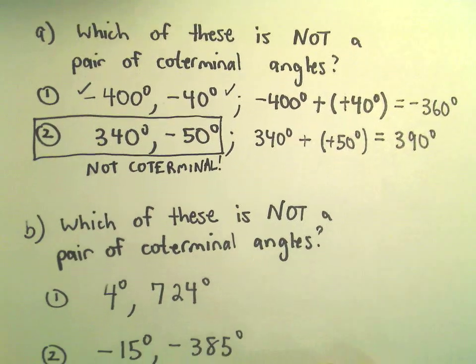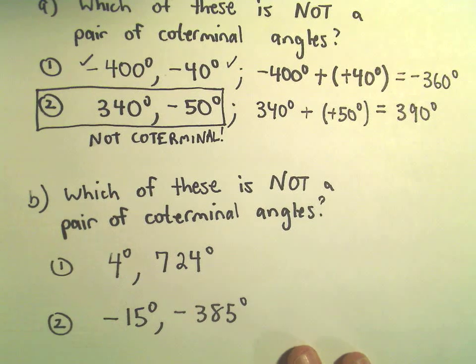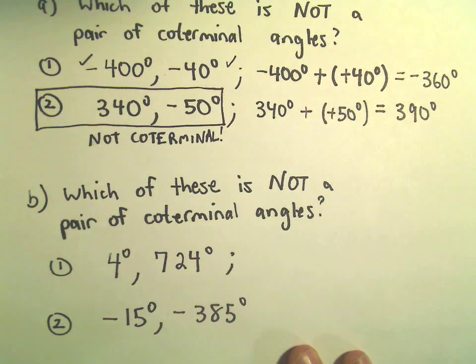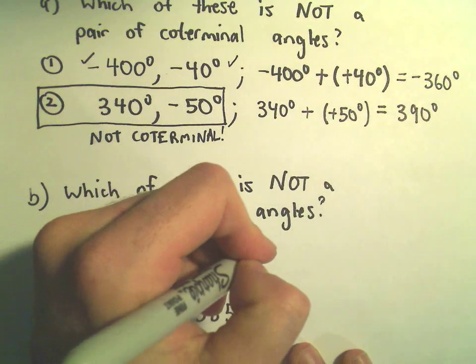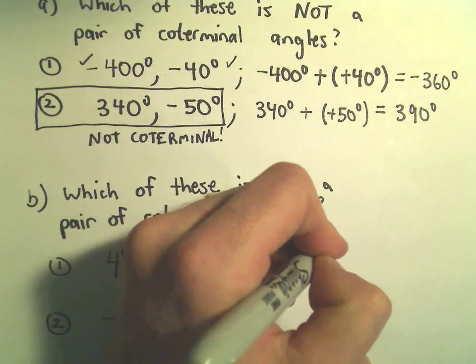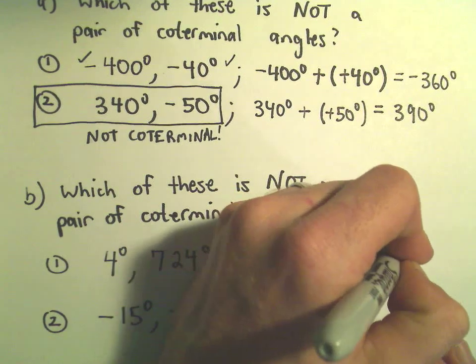Same thing at the bottom. We've got 4 degrees and 724 degrees. It doesn't really matter the order you subtract them - a lot of times I'll just do the bigger minus the smaller. So let's check 724 degrees minus 4 degrees. That's going to give us 720 degrees.